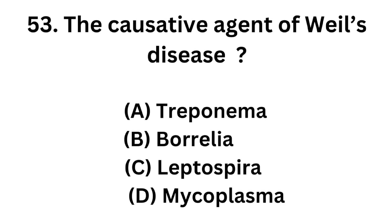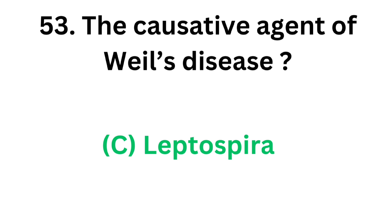Question number 53. The causative agent of Weil's disease. Option A: Treponema. Option B: Borrelia. Option C: Leptospira. Option D: Mycoplasma. The correct answer is Option C, Leptospira. The causative agent of Weil's disease is Leptospira.